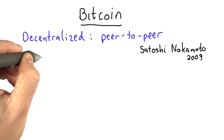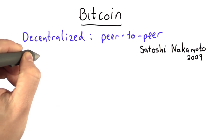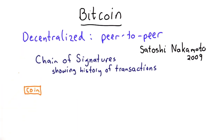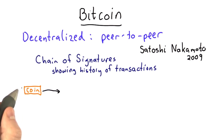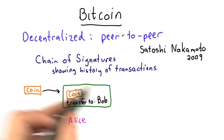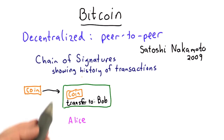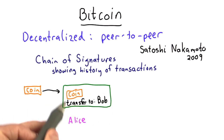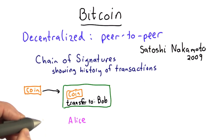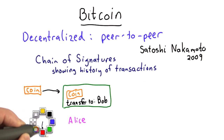In order to track transactions, we have a chain of signatures. Here's how that works. Some coin comes in — we'll have to talk about how that value gets created next. For Alice to transfer that coin, what she'll do is create a message that includes the coin, includes that she's transferring it to Bob, and she'll sign that with her key.